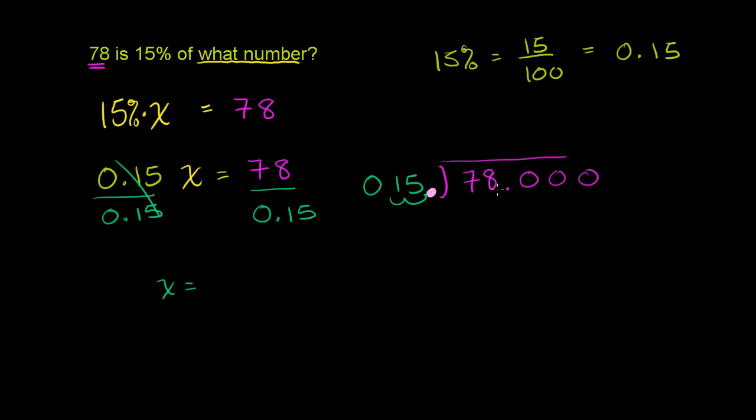And if we did that for the 15, we also have to do that for the 78. So if we move the decimal 2 to the right, 1, 2, it becomes 7,800. Or 7,800. So one way to think about it, 78 divided by 0.15 is the same thing as 7,800 divided by 15, multiplying the numerator and the denominator by 100. So let's figure out what this is.